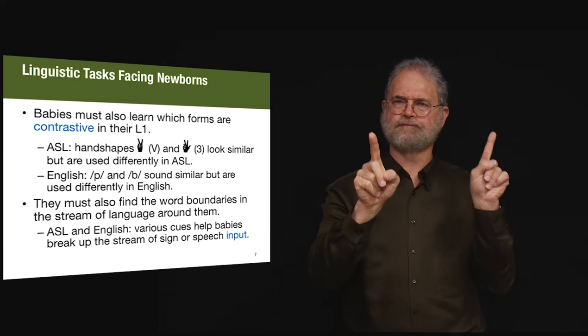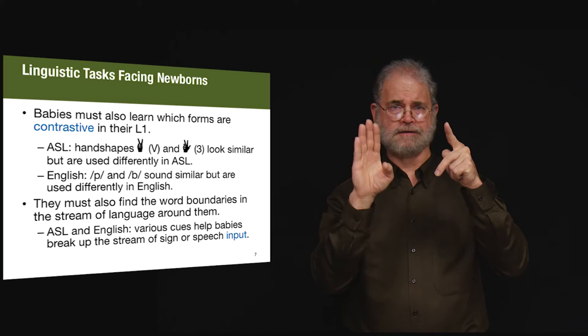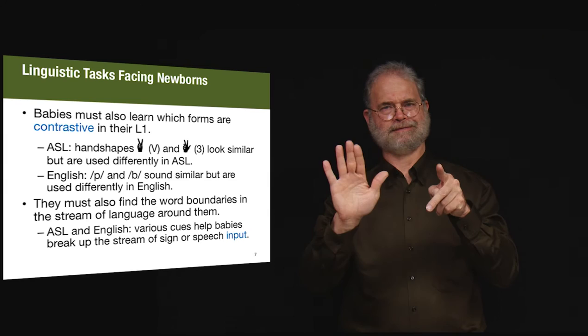For example, in ASL, the two and three handshapes look similar, but they are quite distinctive in the language. In spoken language, the sounds P and B are also physically very similar, but they are distinctive. They are used to identify different words.